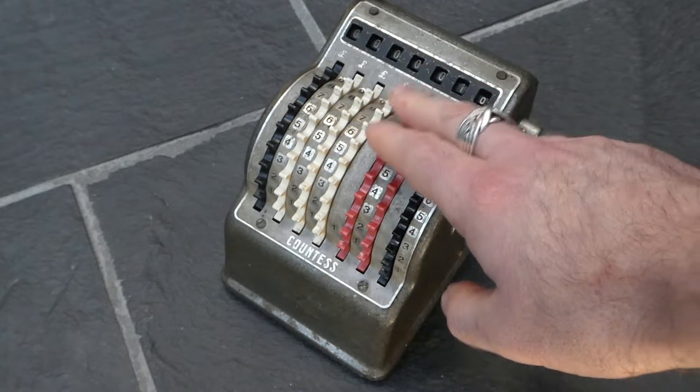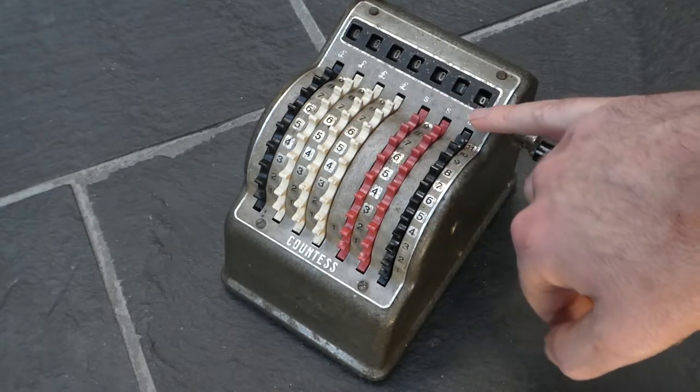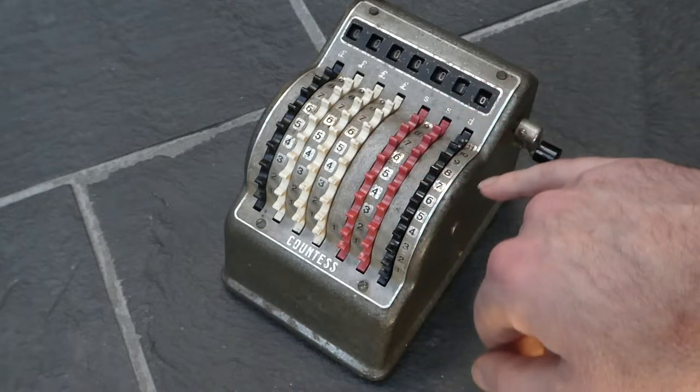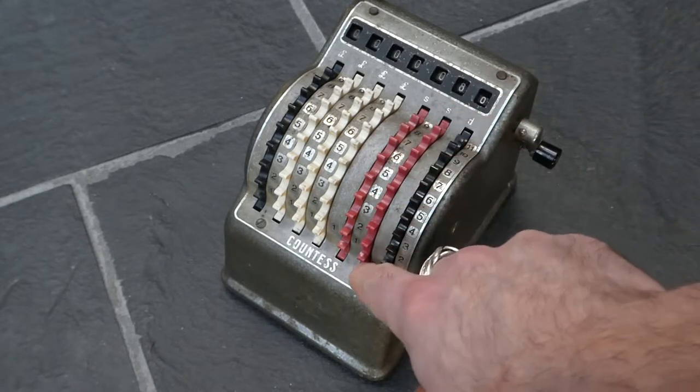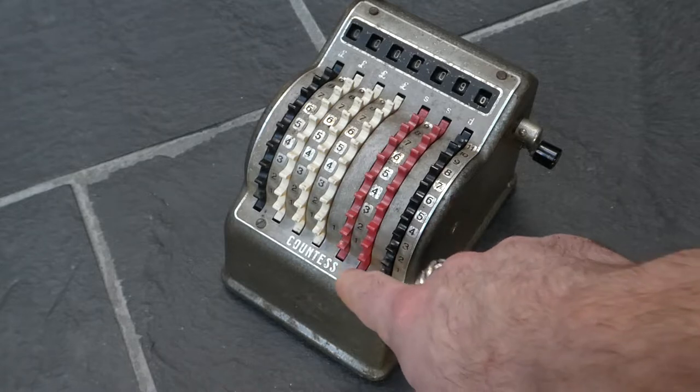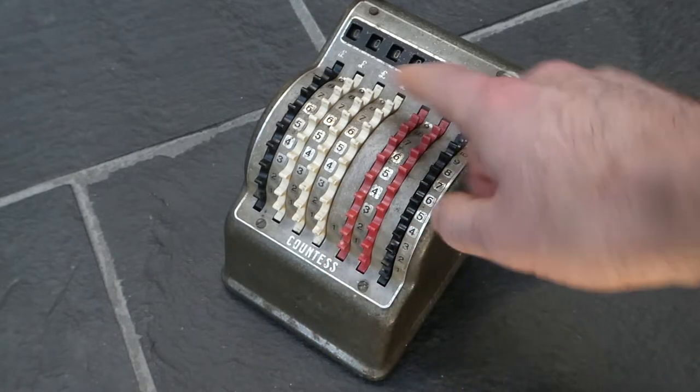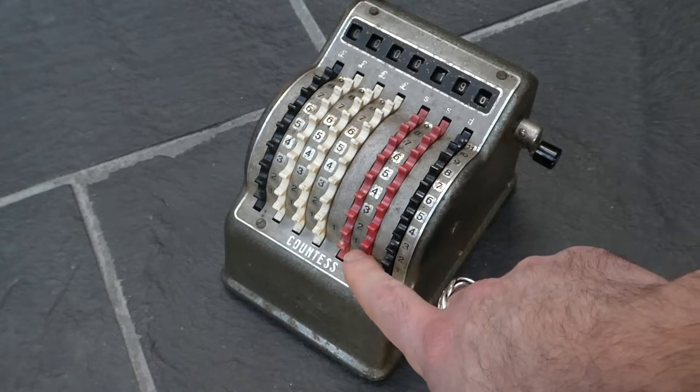And these next two columns are the shillings. It also has an S at the top here to show that. So these shillings, those go up to 19, and if you then add one more it carries over.